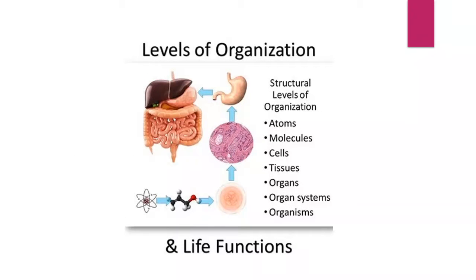Levels of organization. Look at the diagram. A small atom combines together to form a molecule. Then different molecules combine to form a cell. Different cells combine to form a tissue. Then different tissues combine to form an organ — as you can see, different tissues combine to form a stomach. Then different organs combine to form an organ system, as you can see in the whole digestive system.